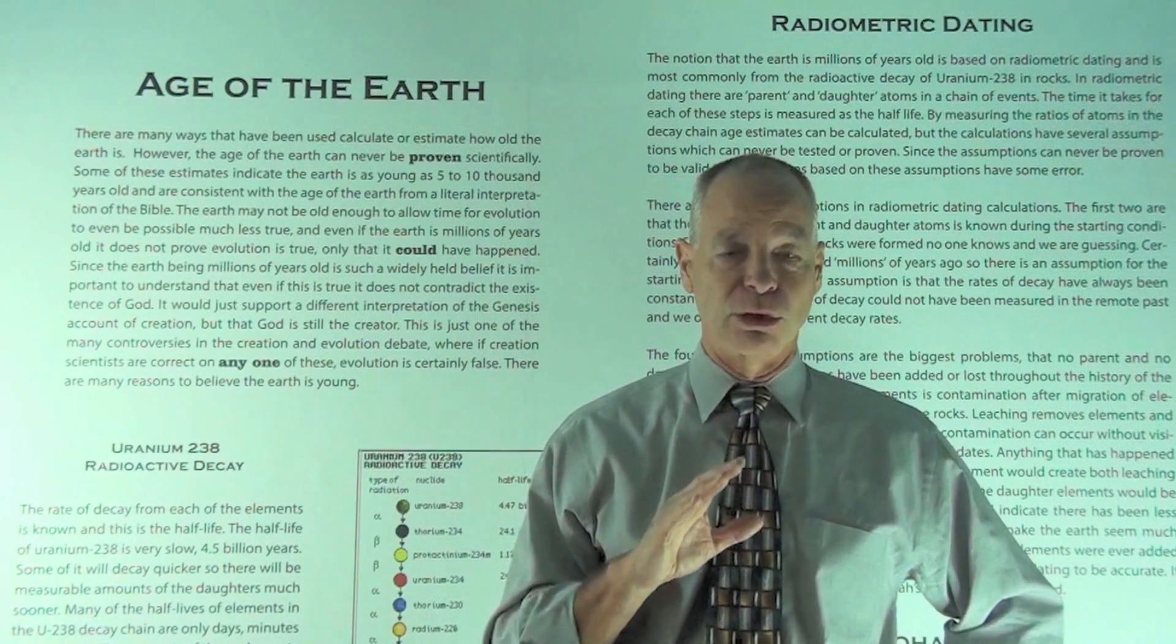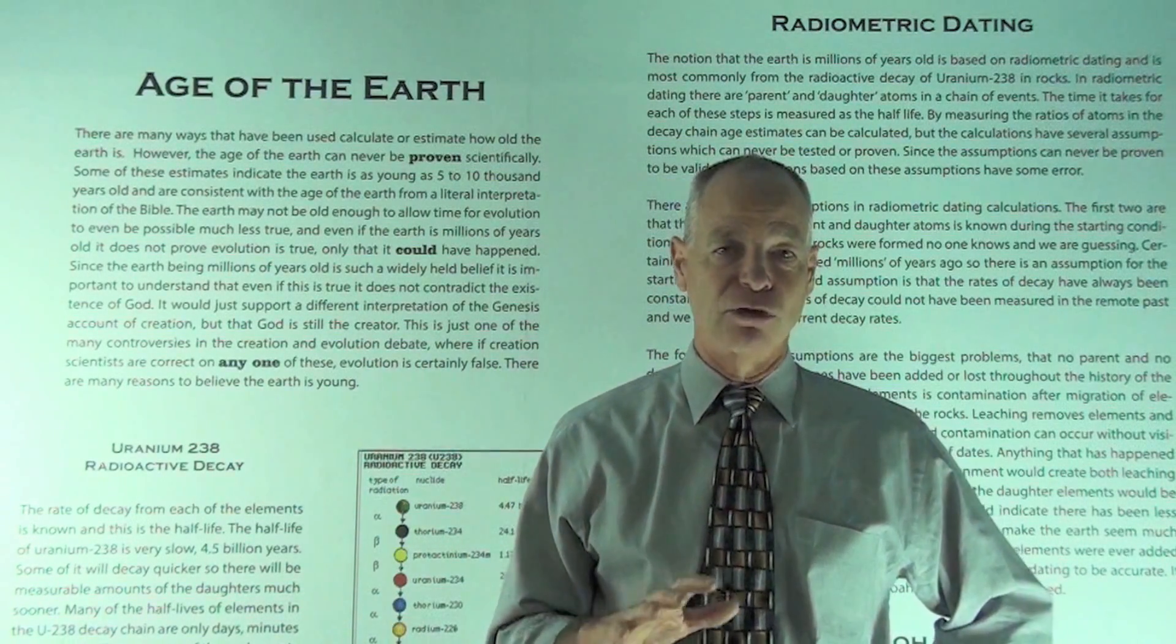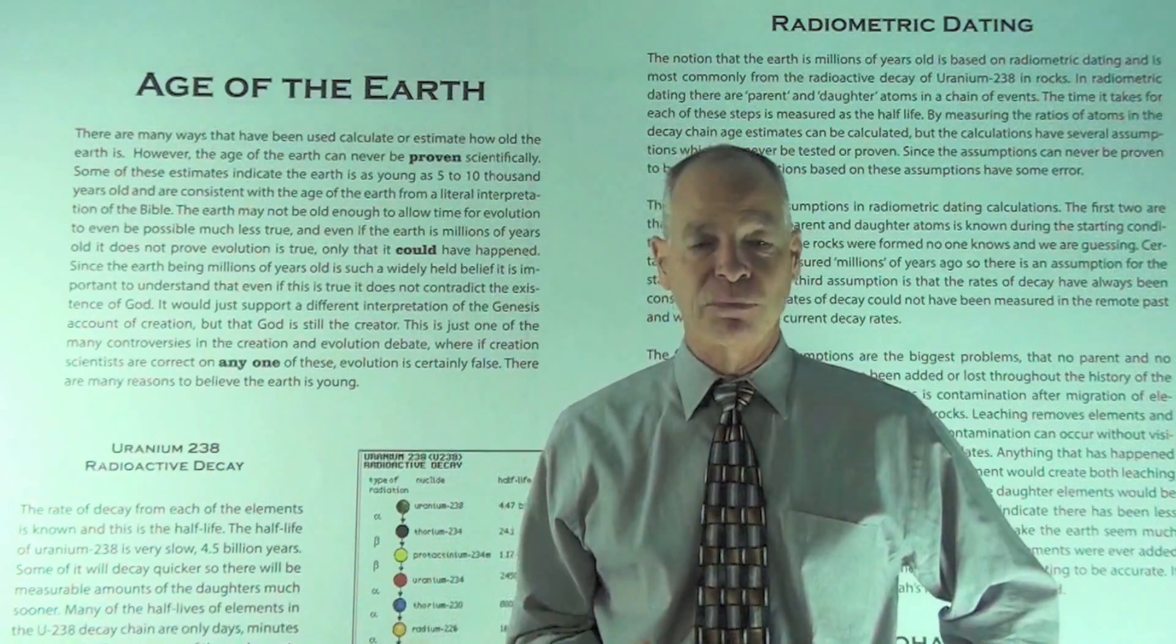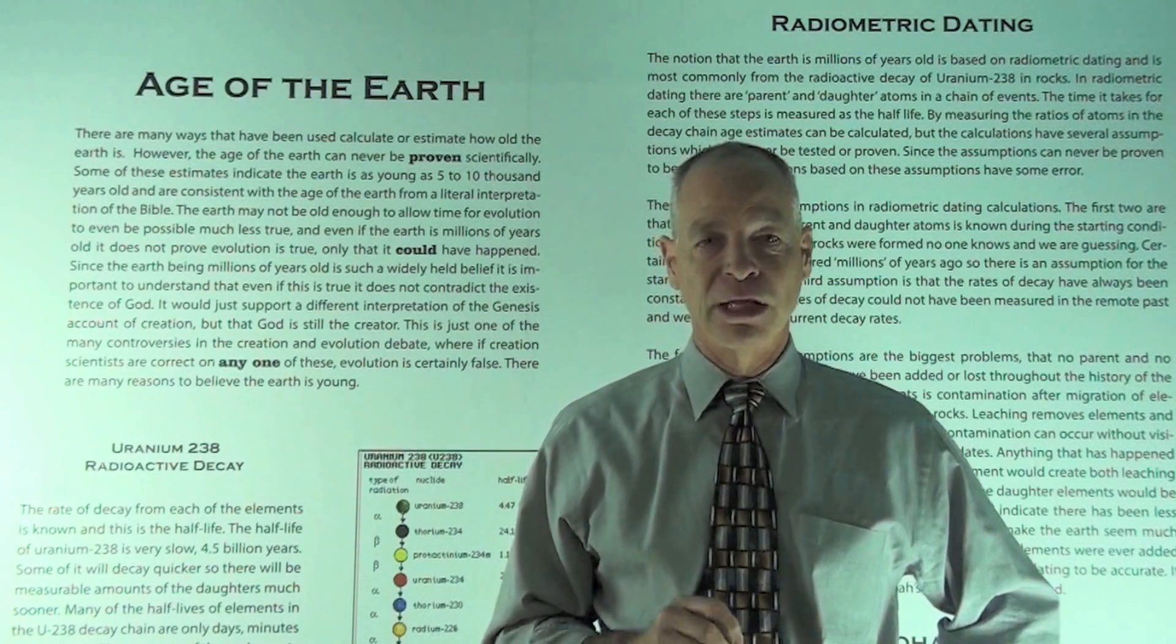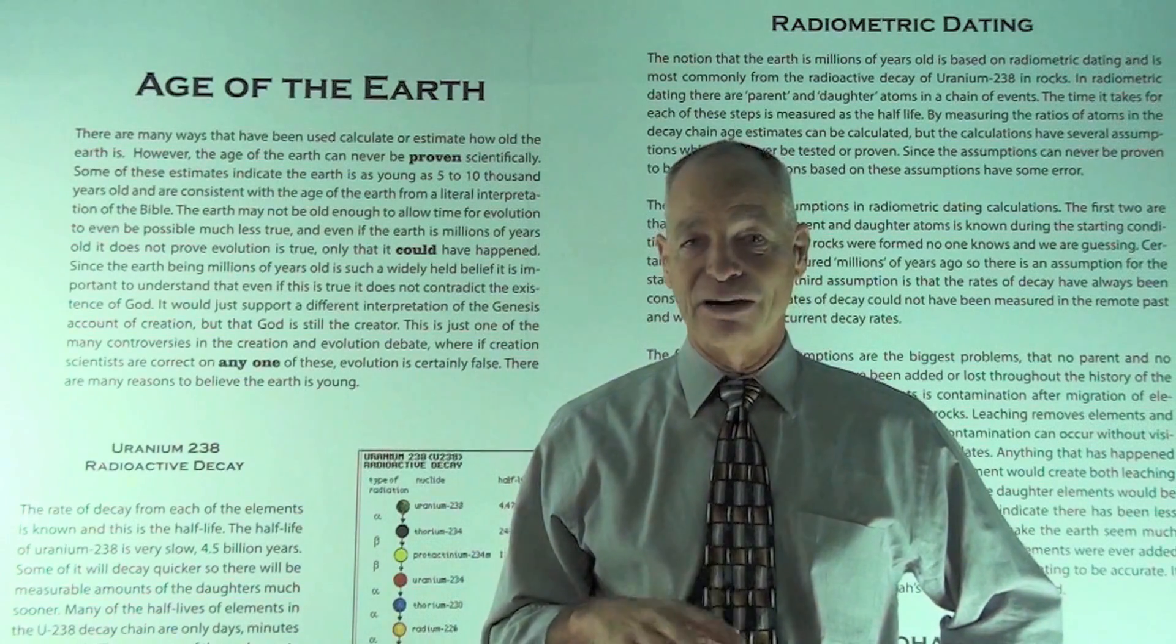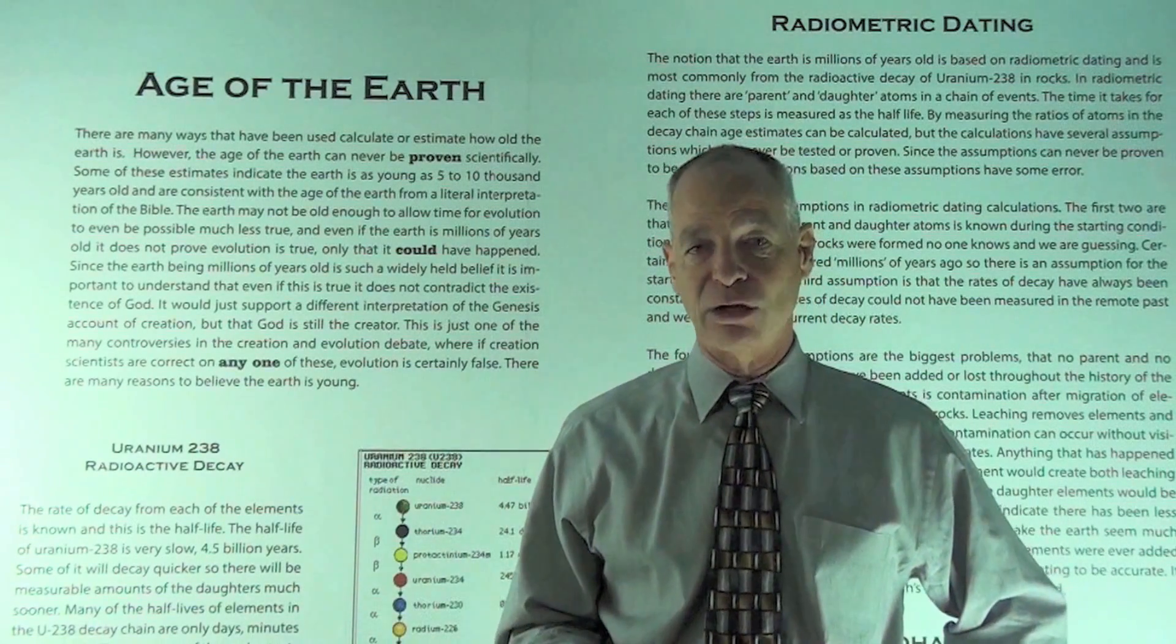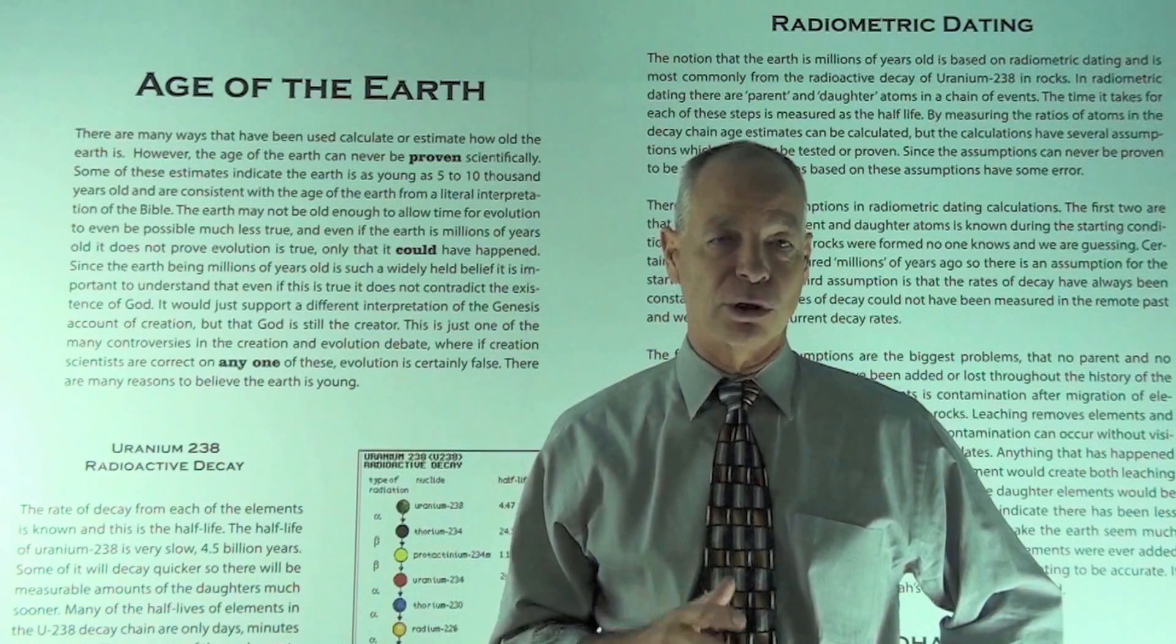And the biggest one is if you remove atoms from a rock, then that's called leaching, and the event of Noah's Flood would cause washing out and leaching of the daughter atoms in the radioactive decay chain and would drastically make the calculations show that the Earth is much older than it is. So to believe that the Earth is millions of years old is really based on believing that Noah's Flood never happened because that global event with the leaching and washing of the daughter atoms in the nuclear decay chain would affect the calculations such that the Earth could not possibly be old enough for evolution to occur.